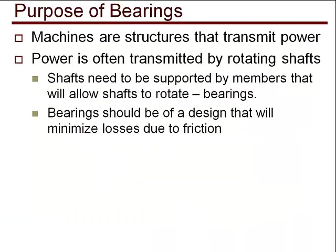Machines are structures that transmit power from one point in the machine to another. At times rotating shafts transmit the power and these must be supported in a way that will allow the rotation and minimize friction losses.